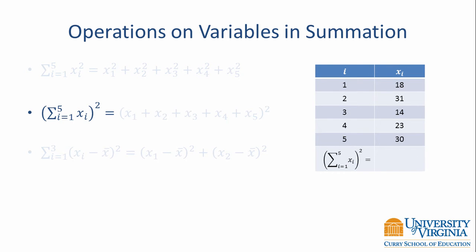By adding parentheses to the summation notation, we actually get a different result. Here we have the sum of i equals 1 to 5 of x sub i, and that quantity is squared. Because of the parentheses, we add the elements first and then square the result. This notation expands to x sub 1 plus x sub 2 plus x sub 3 plus x sub 4 plus x sub 5, and that sum is squared. In the context of our data example, we add 18 plus 31 plus 14 plus 23 plus 30 to get 116, and then square that result. 116 squared is 13,456.